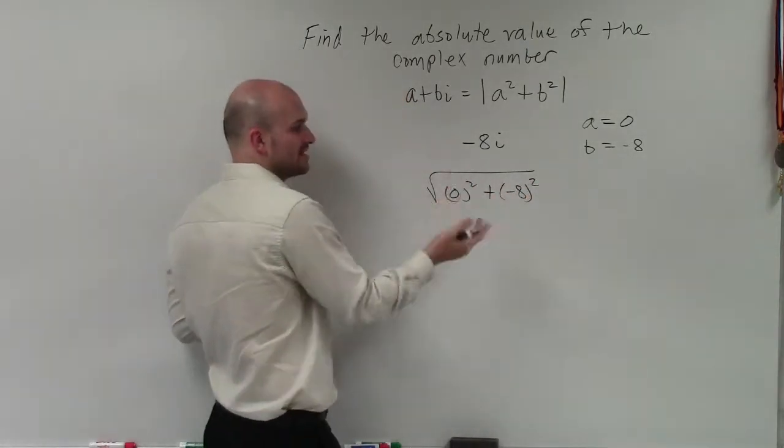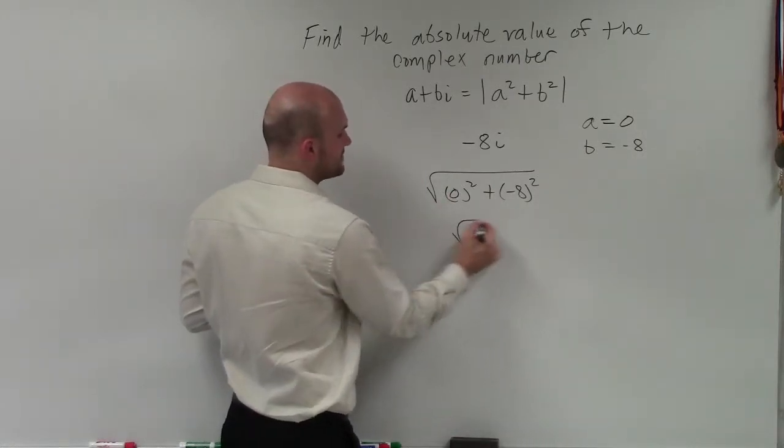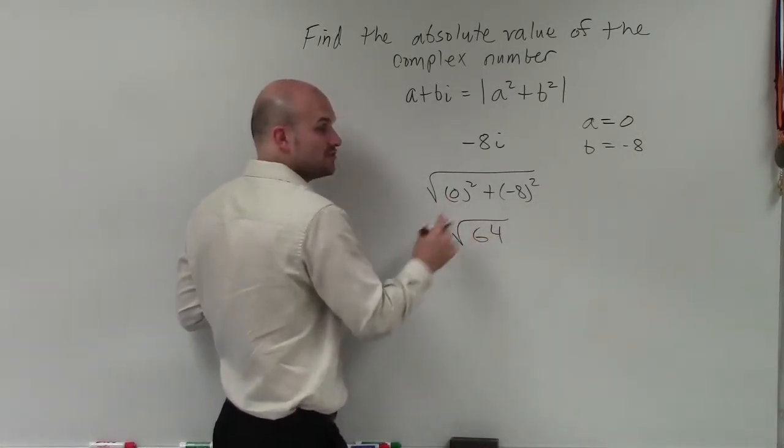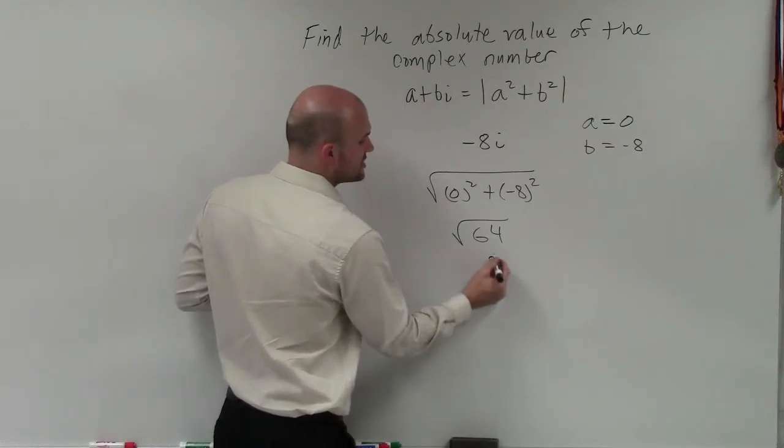Well, 0 squared is 0. Negative 8 squared is going to be a positive 64. And I can take the square root of 64, which is just going to equal 8.